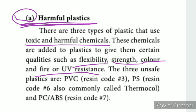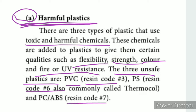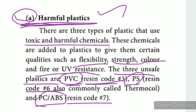The three unsafe plastics are identified by resin code 3, resin code 6, and resin code 7. Resin code 3 is PVC. Resin code 6 is PS (polystyrene). Resin code 7 includes PC (polycarbonate) and ABS (Acrylonitrile Butadiene Styrene).